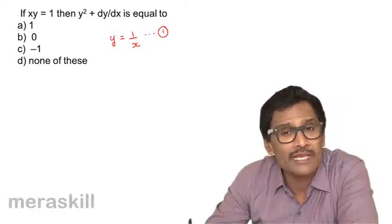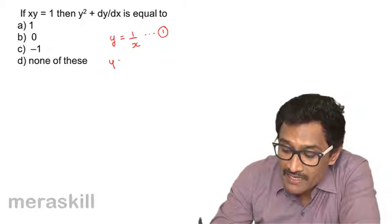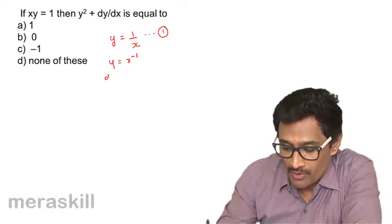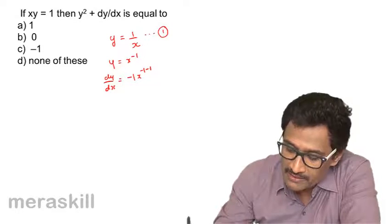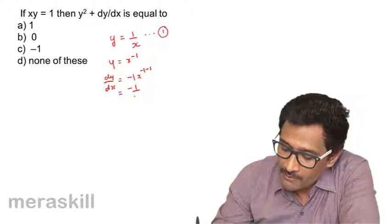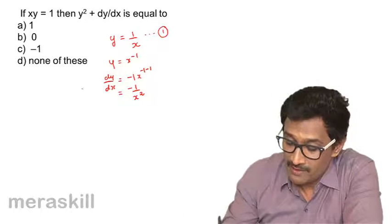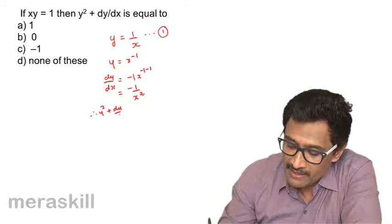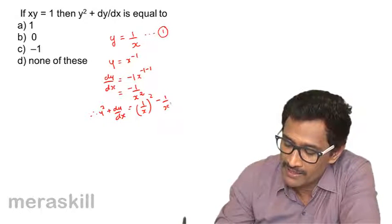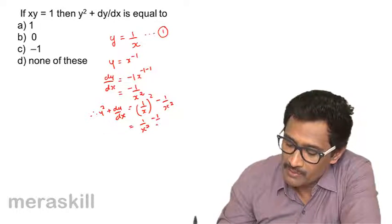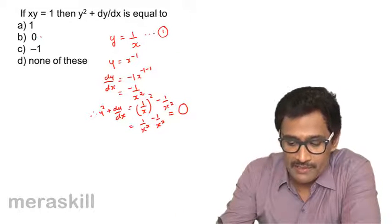Where y is explicitly expressed in terms of x, this is the same as y equal to x raised to minus 1. So dy by dx would be minus 1 into x raised to minus 1 minus 1, which turns out to be minus 1 upon x squared. They have asked for y squared plus dy by dx, which is 1 upon x squared minus 1 by x squared, which is nothing but 0. So obviously, 0 is the right option.